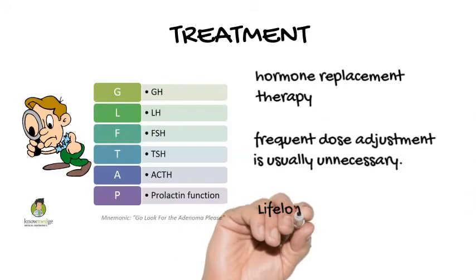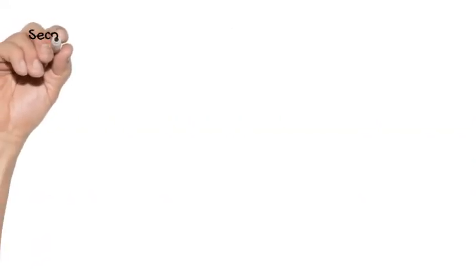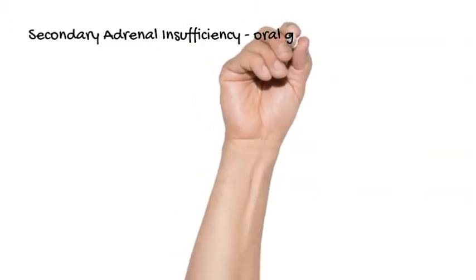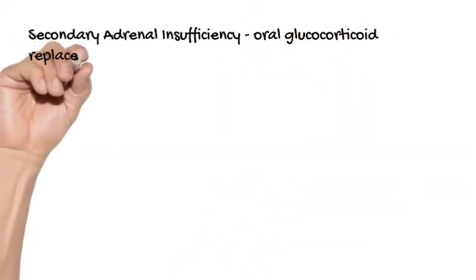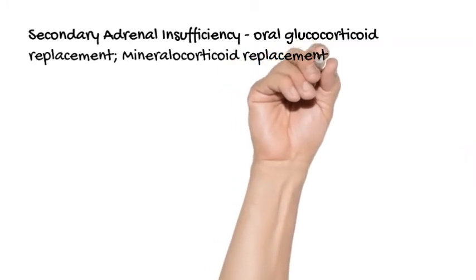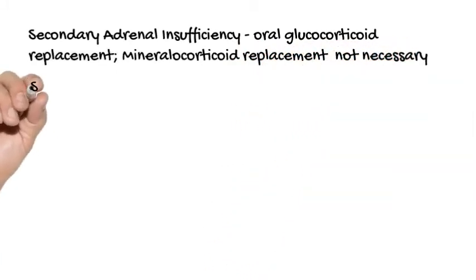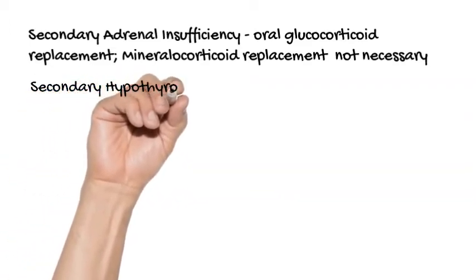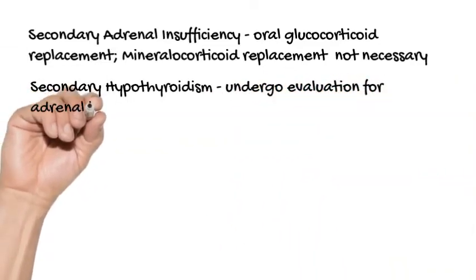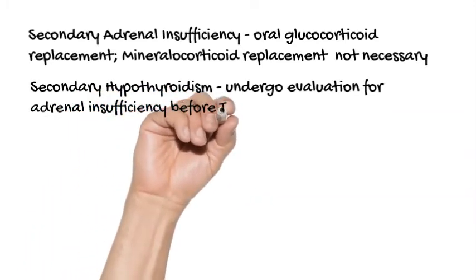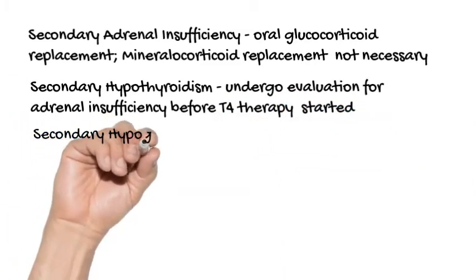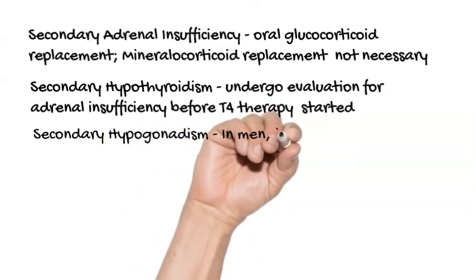Lifelong follow-up is necessary in all patients with hypopituitarism. Secondary adrenal insufficiency is treated with oral glucocorticoid replacement using hydrocortisone, prednisone, or other glucocorticoids in an amount and timing to mimic the normal pattern of cortisol secretion. Mineralocorticoid replacement is not necessary because the renin-angiotensin-aldosterone system is unaffected by pituitary failure. Secondary hypothyroidism patients should undergo evaluation and, if necessary, treatment for adrenal insufficiency before T4 therapy is started, as T4 increases catabolism of cortisol and can precipitate adrenal crisis in a patient with untreated adrenal insufficiency.